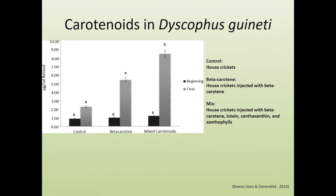It's not just about carotenoids — retinol levels also showed differences across those same treatments. The control had some retinol; beta-carotene supplementation led to slightly more; the mixed carotenoid treatment showed even more retinol accumulation. This is an indirect indication that this frog species can synthesize retinol from carotenoids — a topic that in some cases is still under debate.